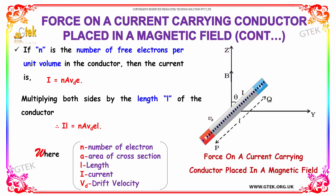If N is the number of free electrons per unit volume in the conductor, the current I is equal to N, the number of free electrons, multiplied by the area A and drift velocity VD. So the total current is I = N·A·VD.